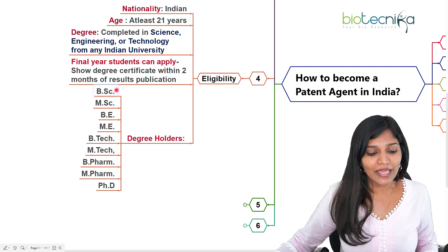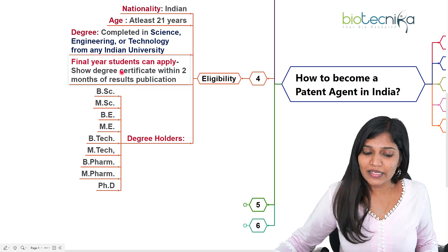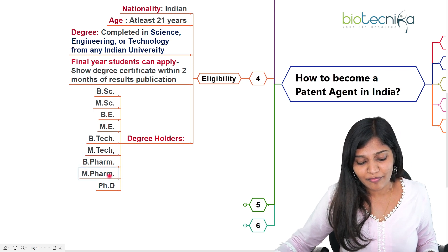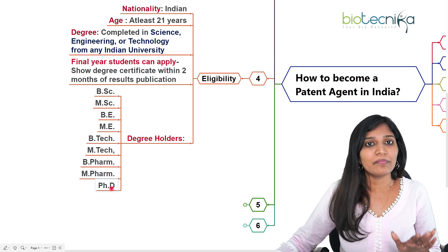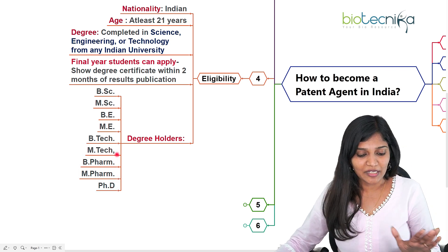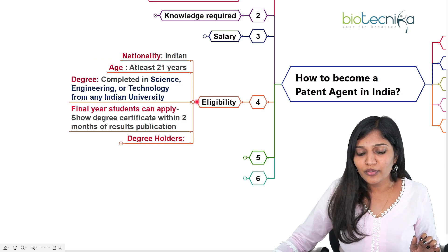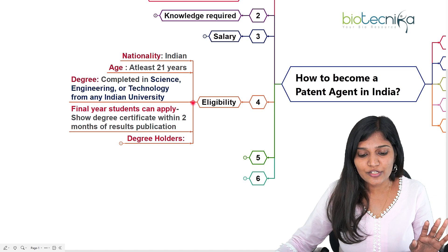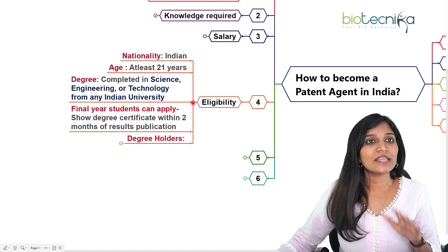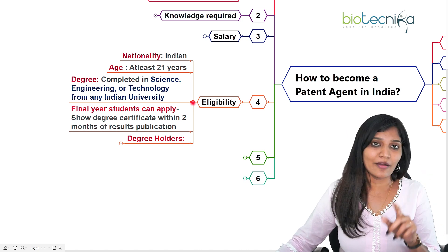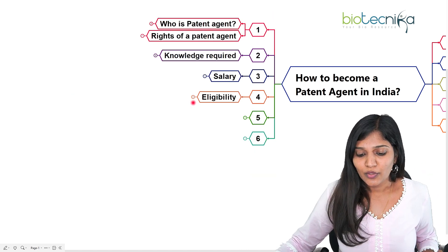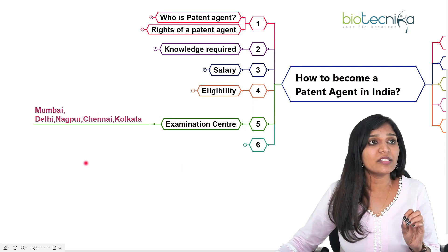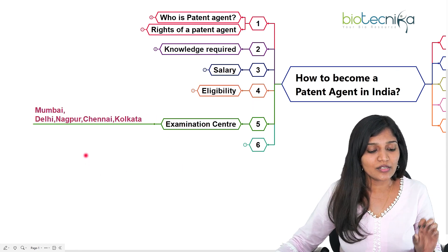The eligible degrees include BSc, MSc in science, BE, BTech, MTech, BPharm, MPharm, and PhD — anybody can apply for this examination. If you're a fresher looking for a government opportunity, I would definitely suggest the patent agent exam, especially since there is no negative marking.